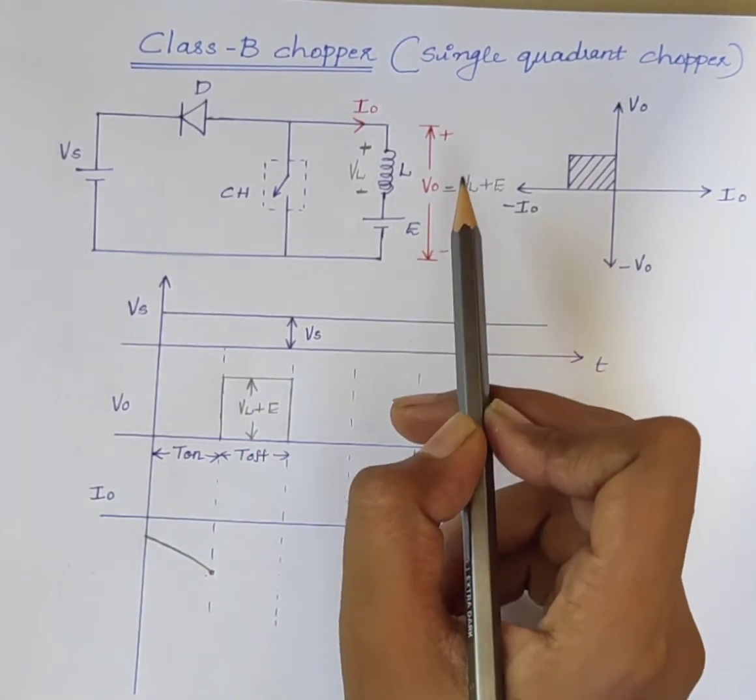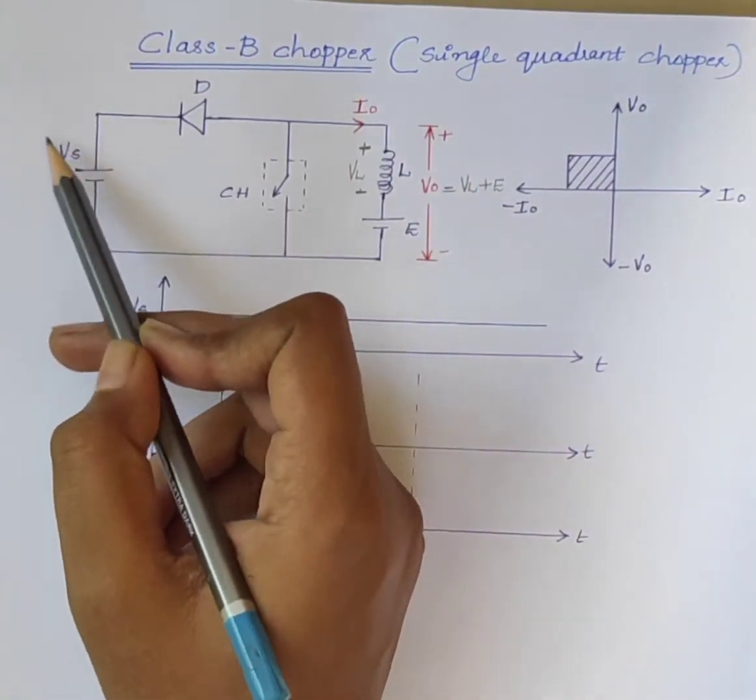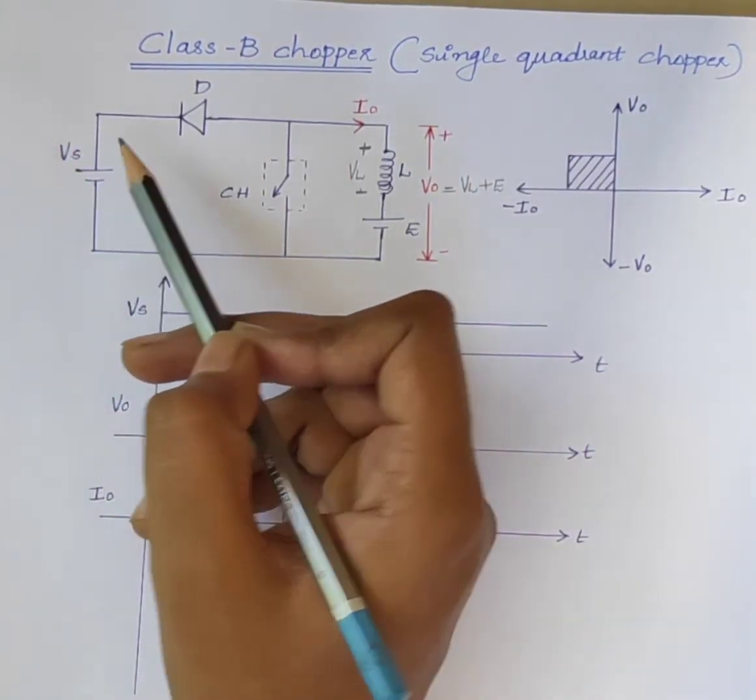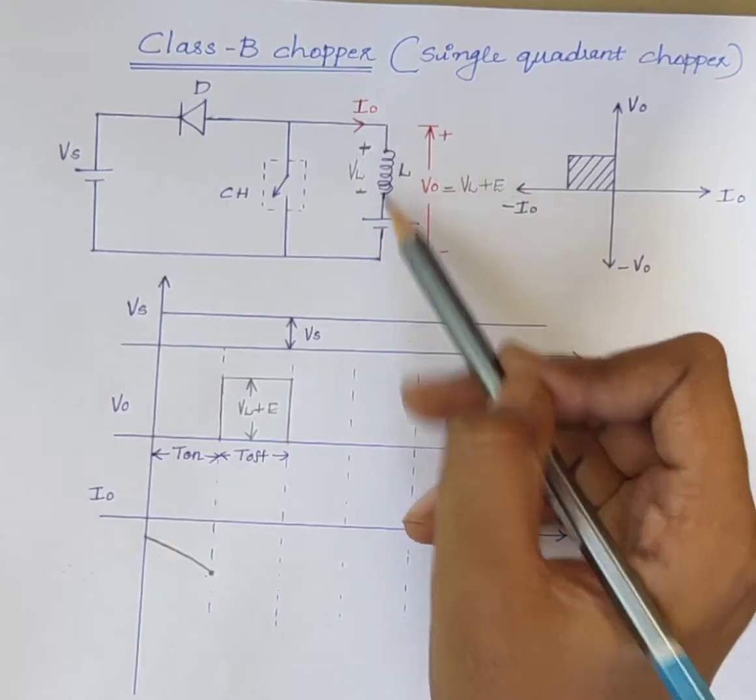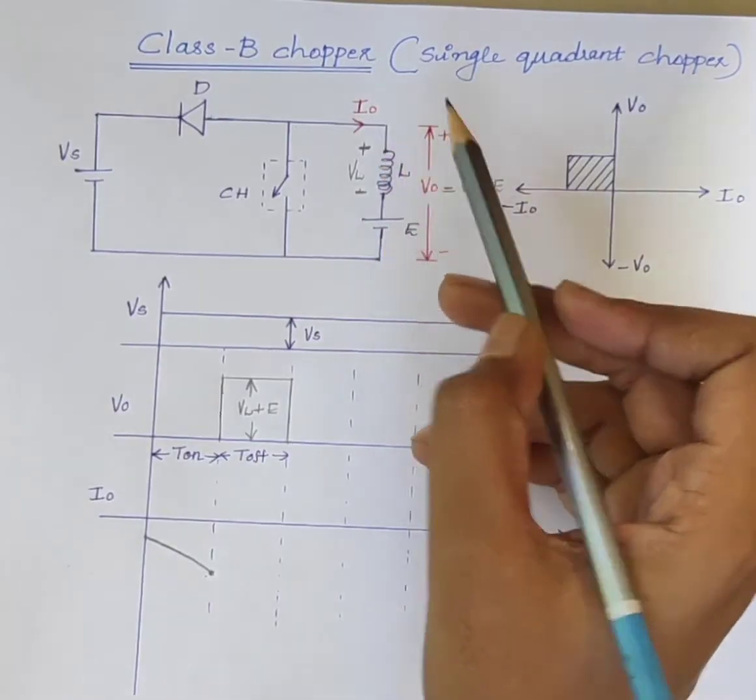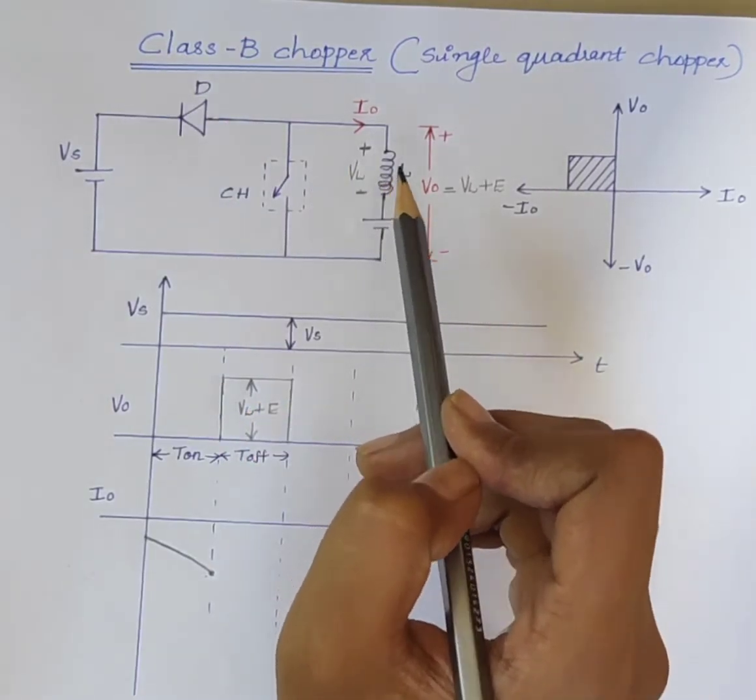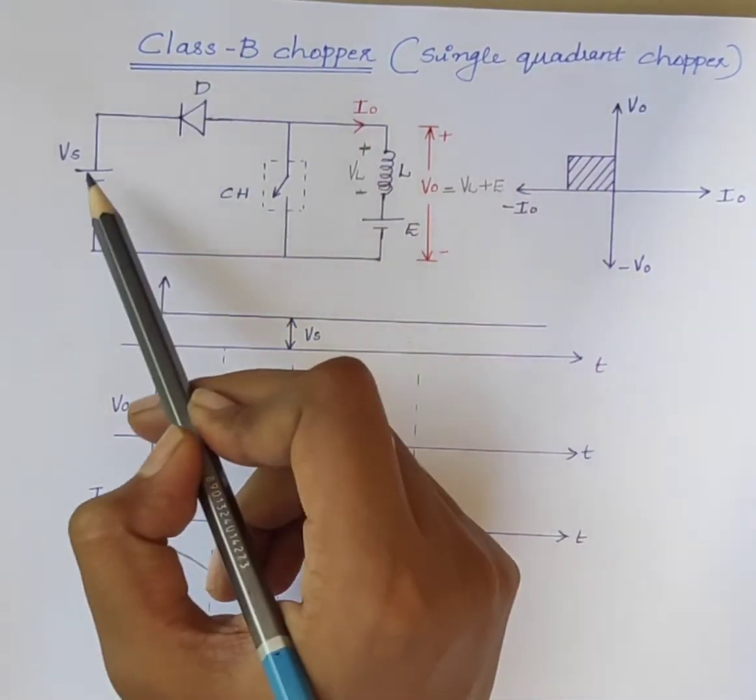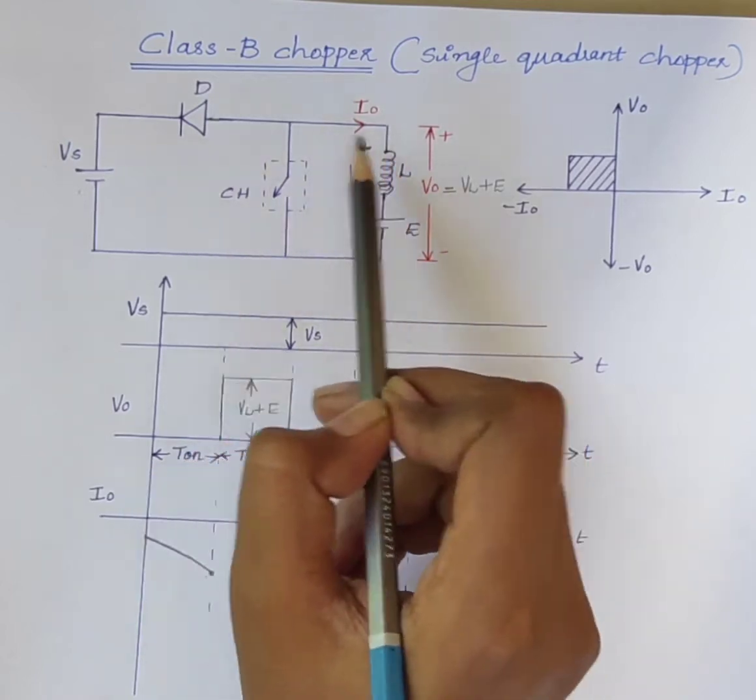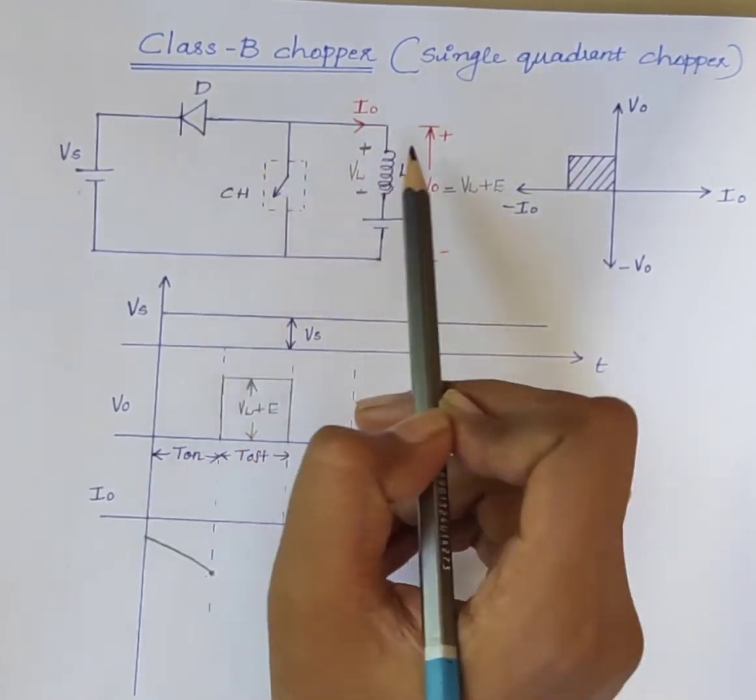Which is greater than the source voltage Vs. Due to this output voltage, the diode D becomes forward biased and the current flows from load to the source. That is, negative direction.